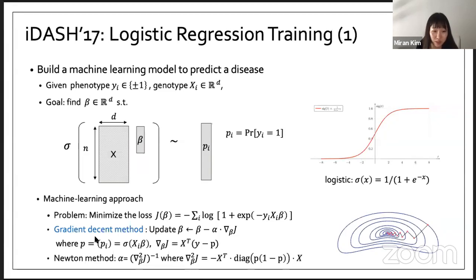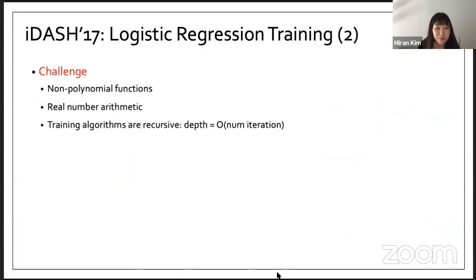The first challenge of the evaluation of gradient descent is that the derivative term is computed as the sigmoid value of the inner product between the old model parameter and the input variable x. As in this figure, the sigmoid is an analytic function and HE only supports addition and multiplication over encrypted data. This means that HE cannot naturally support this evaluation of the sigmoid function. There are another challenges such that the computation is actually real number arithmetic, and since the training algorithms are recursive, the multiplicative depth grows linearly with the number of iterations. In practice we need a few iterations to get meaningful results.